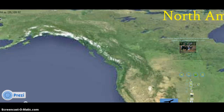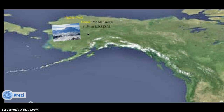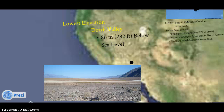Did you know? The highest peak in North America is Denali, also known as Mount McKinley, at an astonishing 6,194 meters or over 20,000 feet elevation. The lowest point is Death Valley, located in California and Nevada, at 86 meters below sea level.